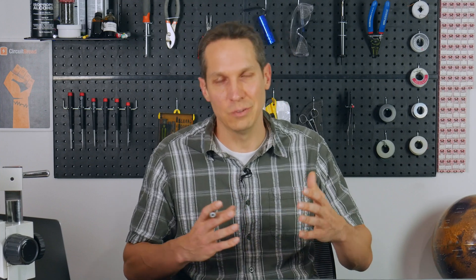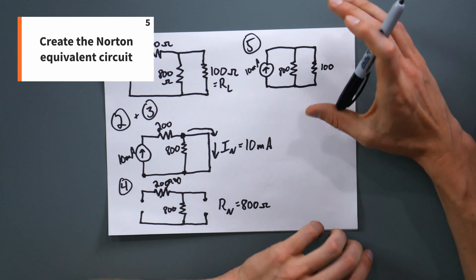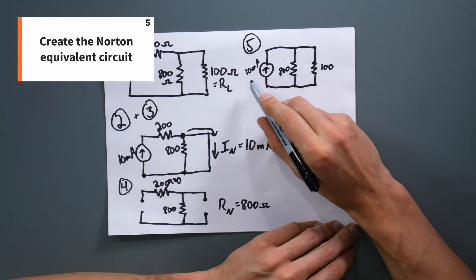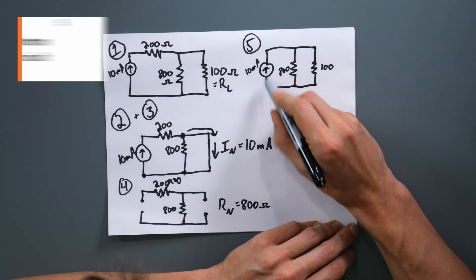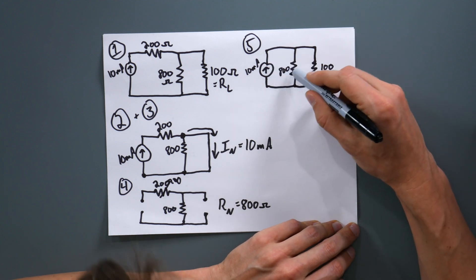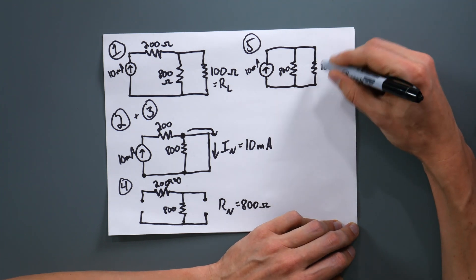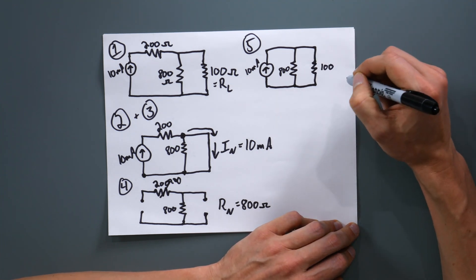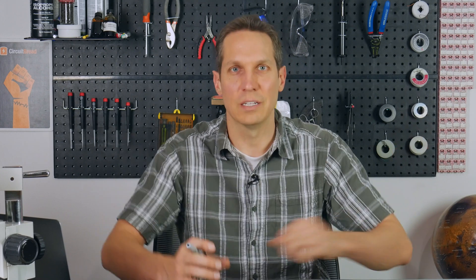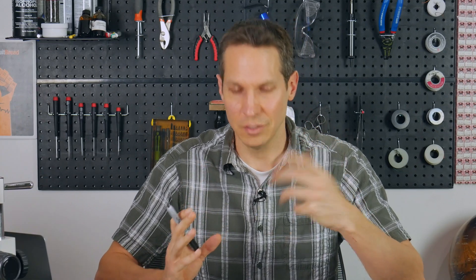We have gotten the two portions we need for our Norton equivalent circuit, so let's go to step five and recreate this circuit as a Norton equivalent circuit. For step five, I've recreated the circuit — we basically have our 10 milliamp current source going over to our 800 ohm Norton resistance, and then we have put our 100 ohm load resistor back in there. That is our final product. If you're asked to create an equivalent circuit, that would be it.